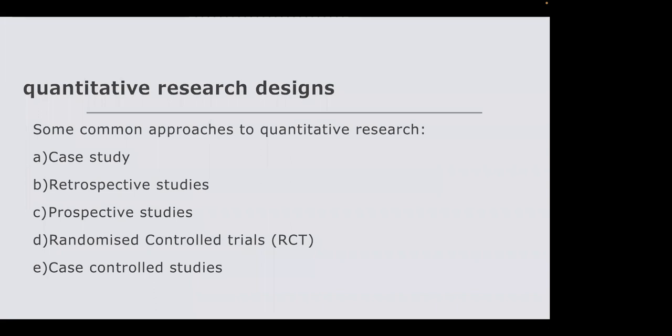Case-controlled studies are similar to randomized trials but are not randomized. The difference is that you pick two groups: one group has the outcome of interest and the other does not. Because you are looking at a single case type, it is a case-controlled study — an improvement on the basic case study — where you create two groups so that you have a control group.